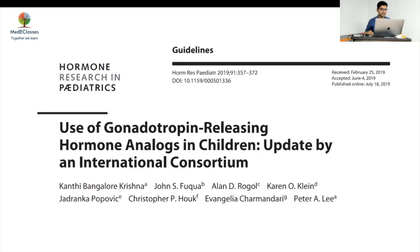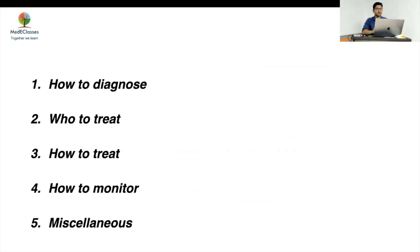GnRH analogues are one of the most used and abused pediatric endocrinology medicines. We'll try to go through the various clinical aspects today — the indications which are established, where it is controversial, and where it should not be used. The guidelines on use of GnRH analogues, updated by the international consortium, reflect recent developments. I will discuss topics under these categories: how to diagnose, who to treat, how to treat, how to monitor, and miscellaneous issues.